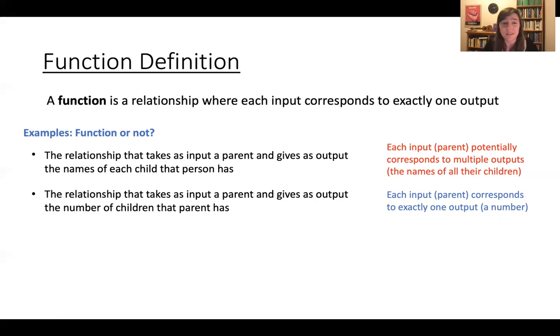Notice that it's okay for two different inputs to correspond to the same output. My brother has three children also. And obviously lots of people in this world would have three children. So there are lots of inputs for this relationship that would spit out the same number for an output. But that's okay. It's still a function because every individual input that you have corresponds to exactly one output, a number. So I feel like if you can get clear on why the first of these is not a function and the second one is, then you're golden.